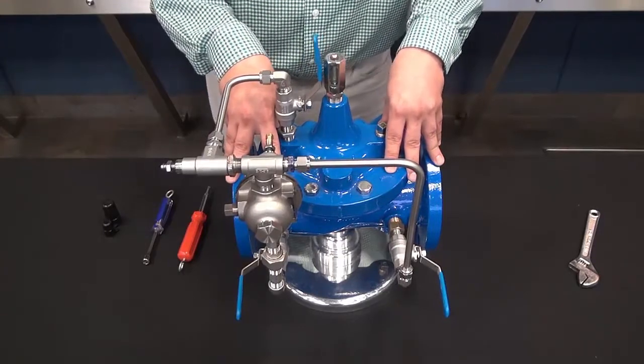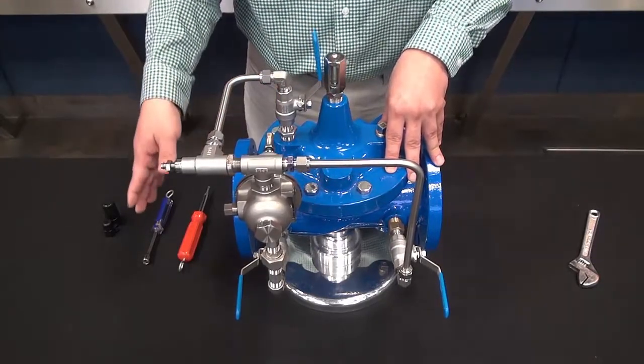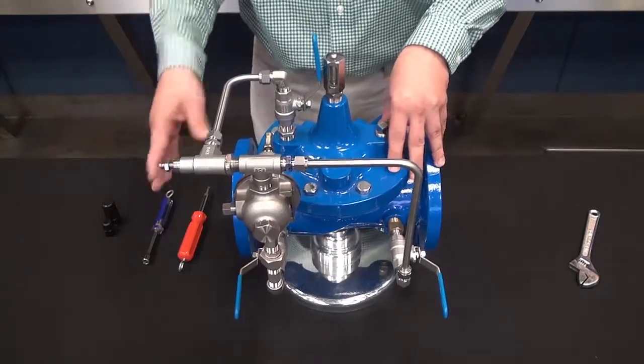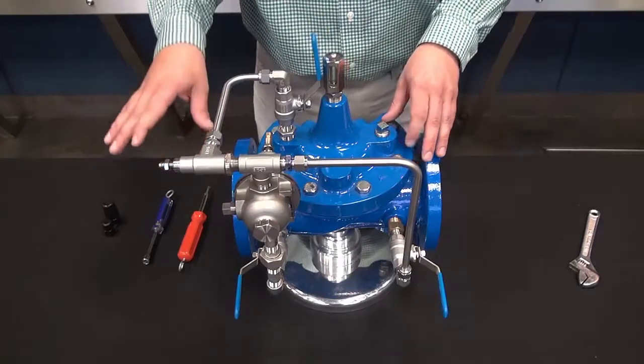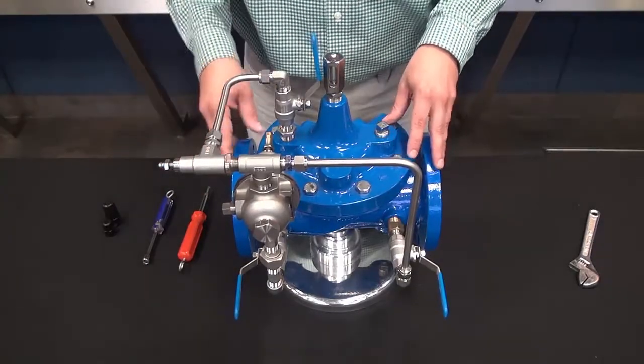Now a 90-01 pressure reducing valve is designed to maintain a downstream pressure regardless of flow rate, regardless of demand. It's always trying to find or modulate into the setting of the CRD.